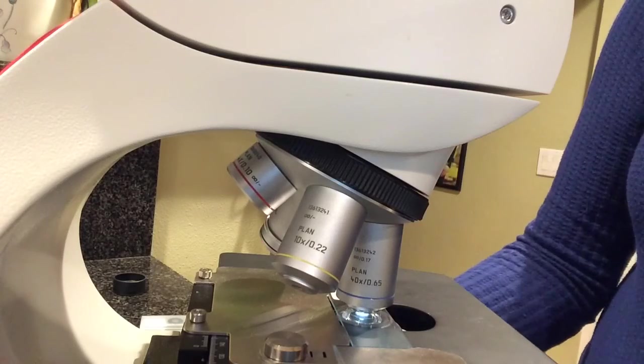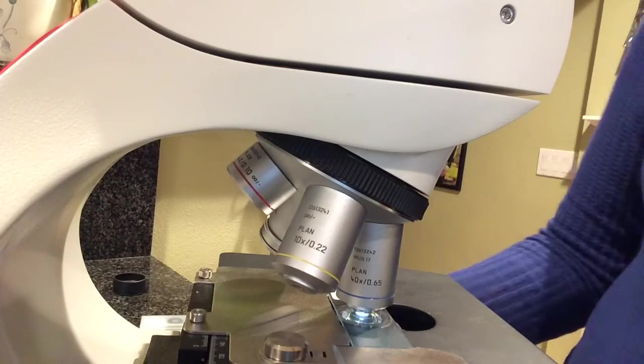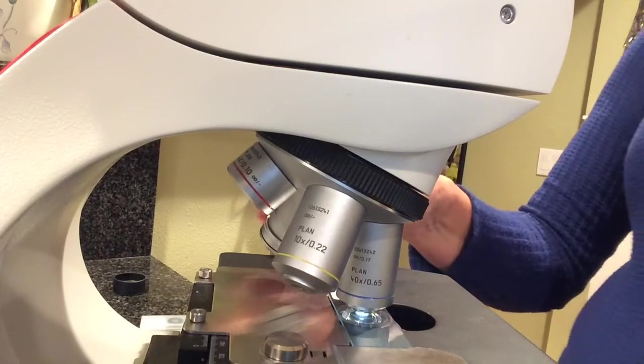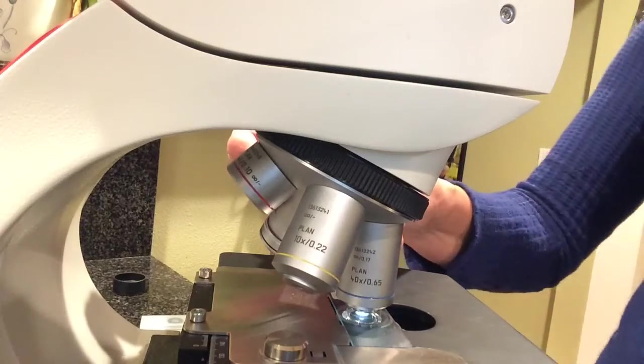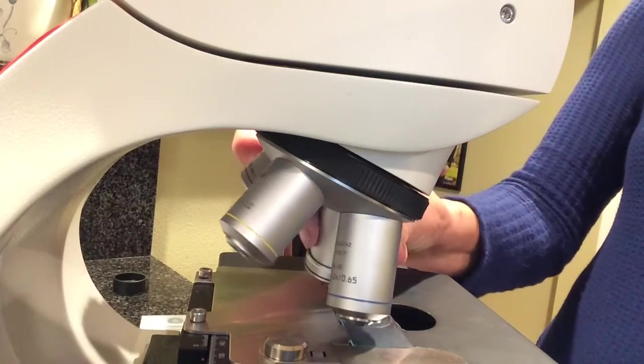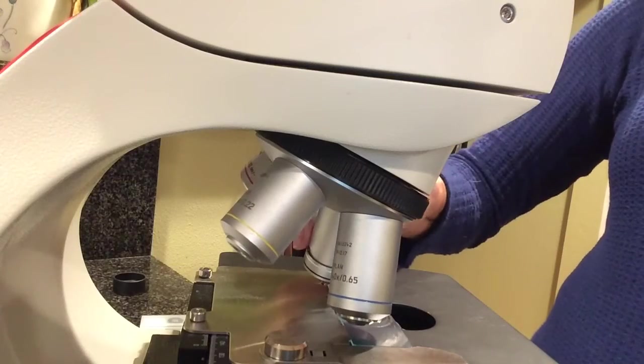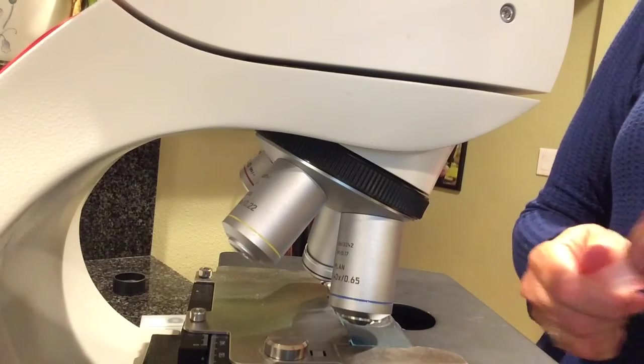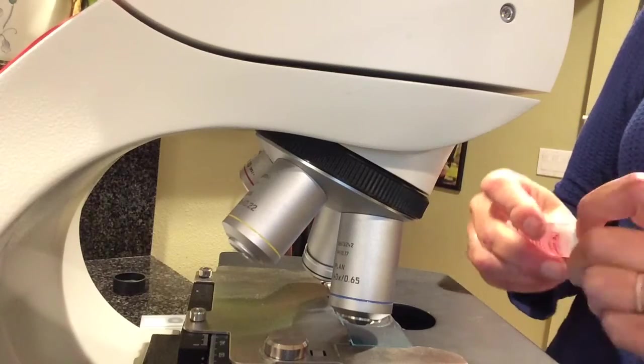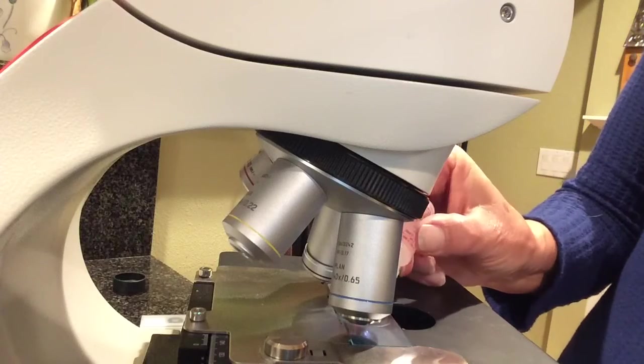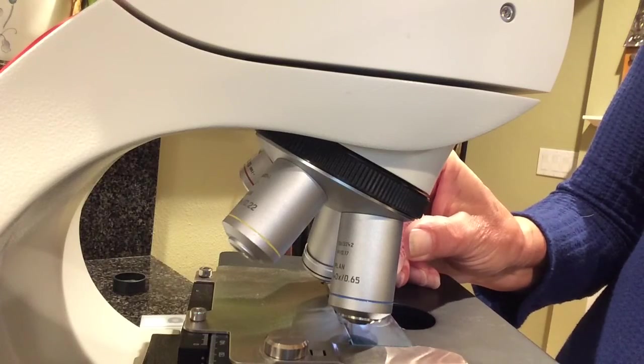Then if you want to go to 100x, this is how I suggest doing it: you swing in between, so you're between the blue lens and the white-ringed lens, and you put a drop of oil right where the light is coming through. One drop is all you need.